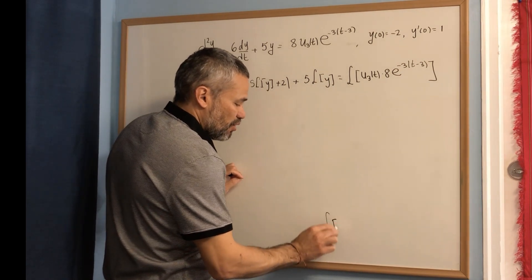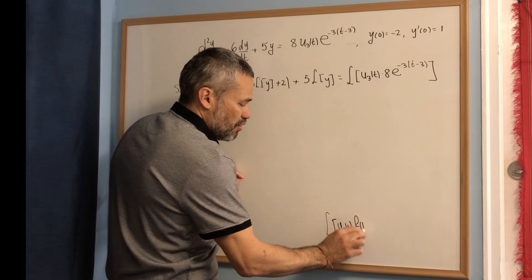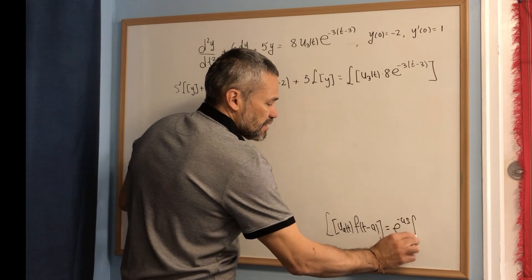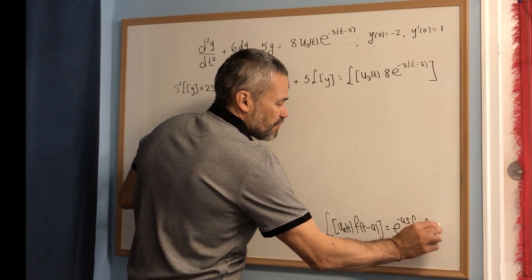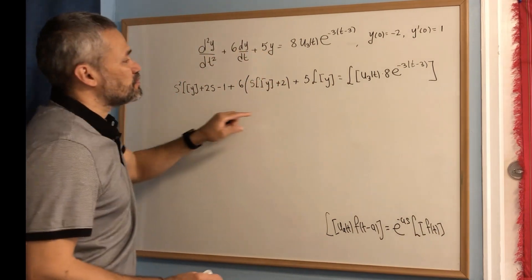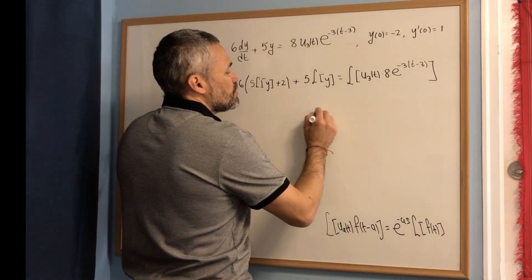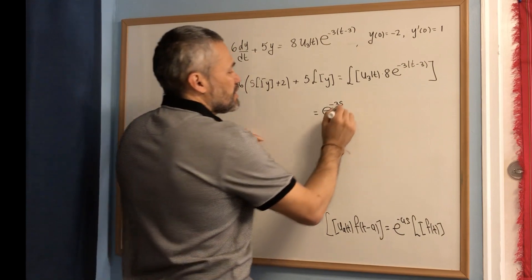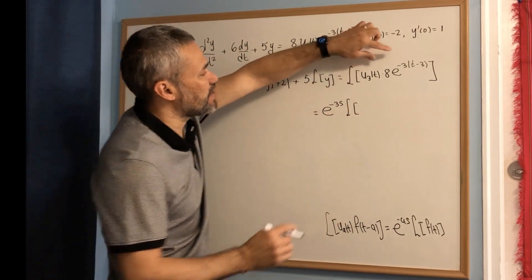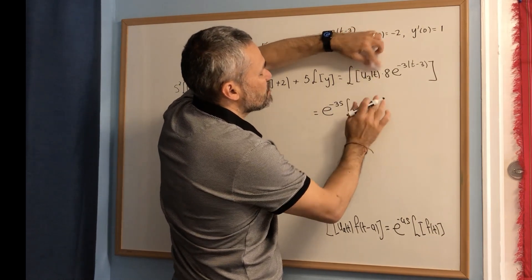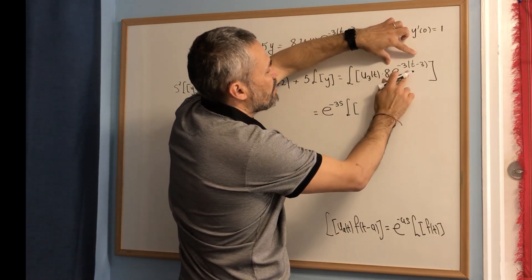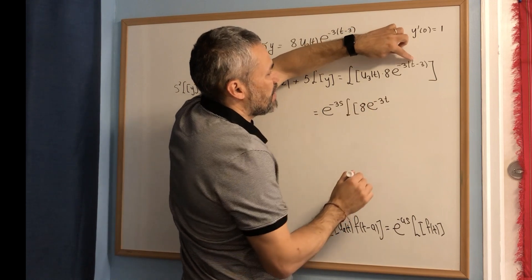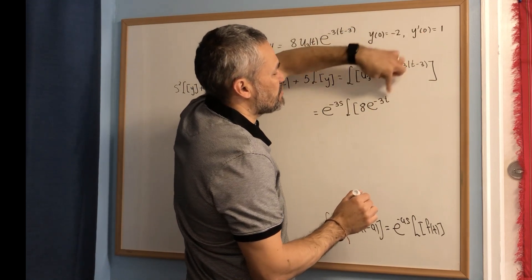To compute the Laplace transform of that function we use the unit step shifting formula: the Laplace transform of u_a(t) times a shifted function equals e to the negative as times the Laplace transform of the original function. In this case, with a equals 3, this is e to the negative 3s times the Laplace transform. We get the original function by dropping the Heaviside part and replacing t with t plus 3, giving the Laplace transform of 8 times e to the negative 3t.